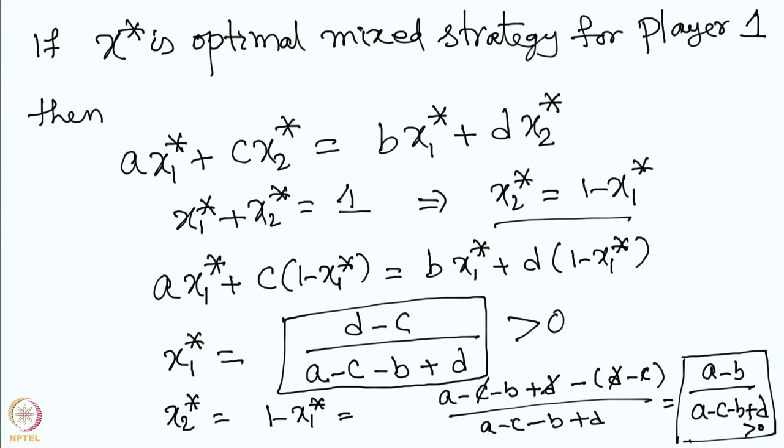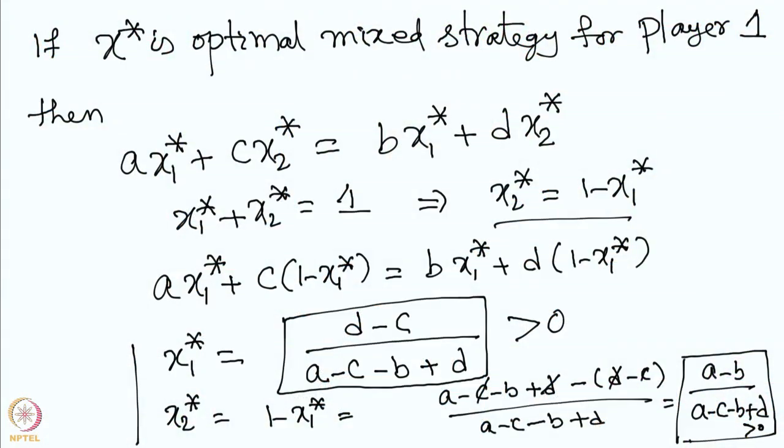So we have computed the optimal strategy for player 1 in a 2x2 game. The approach is: first verify whether a pure equilibrium exists; if not, use this formula for the mixed strategy. A similar analysis can be carried out for player 2. There is also another method — solving via dominated strategies — applicable to zero-sum and non-zero-sum games.